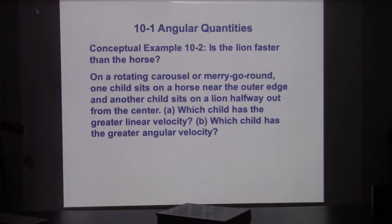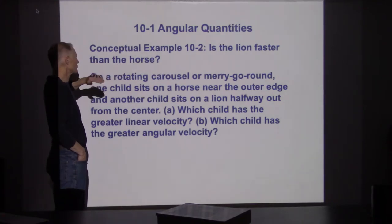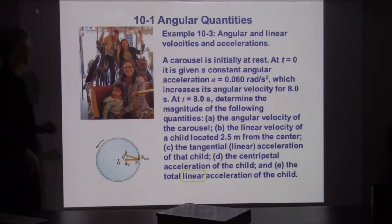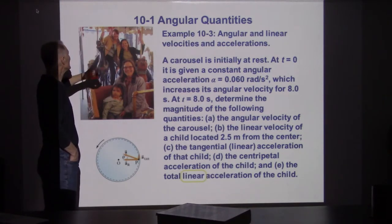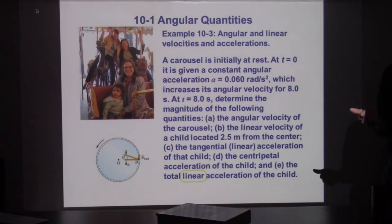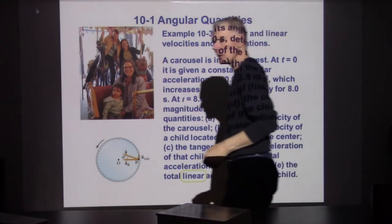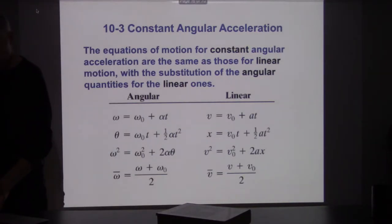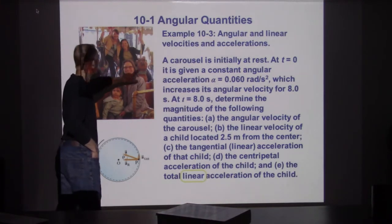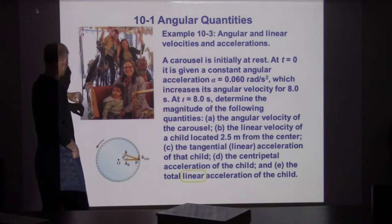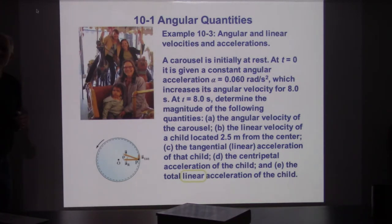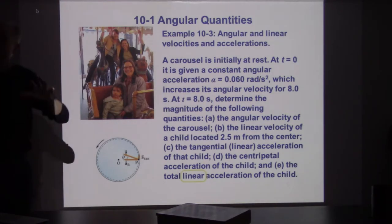That connects circular motion to rotational motion. When we looked at circular motion, we worked in terms of linear velocity v along the path. Now we're relating that to the rotational velocity of the entire object. Here's a conceptual example: is the lion faster than the horse? They're on a merry-go-round. If you get on a merry-go-round, do you want to sit closer to the axis or farther away? It depends on how fast you want to travel — if you sit farther away, you travel a greater distance. The horse appears farther from the center and is going faster.